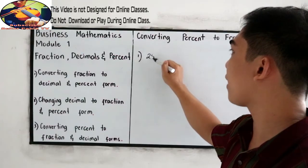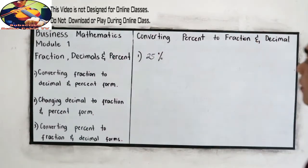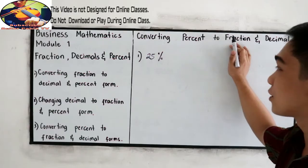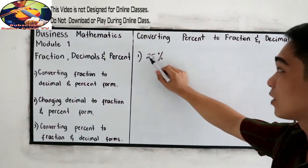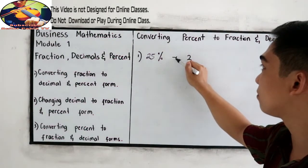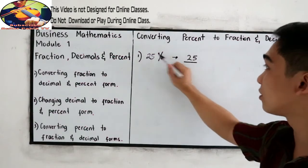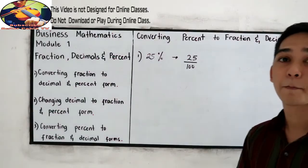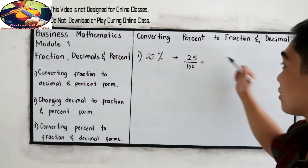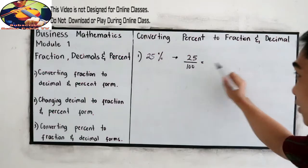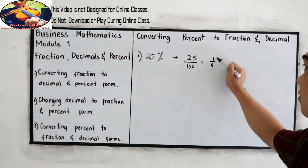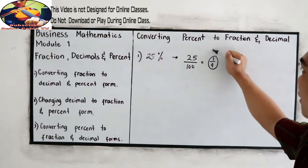Let's say we have 25%. We're going to convert it into fraction. We know that 25% — to get its fraction form, we just need to divide it by 100. So 25 over 100, and of course, reduce to lowest terms. That gives us 1 over 4. This will be our fraction form.